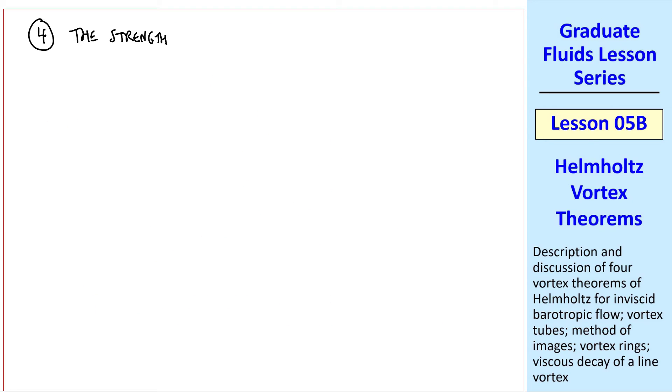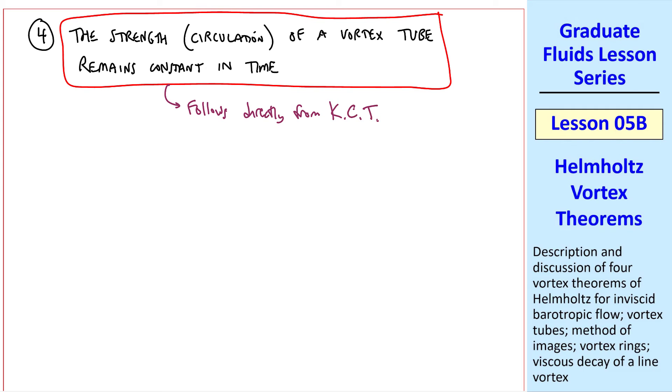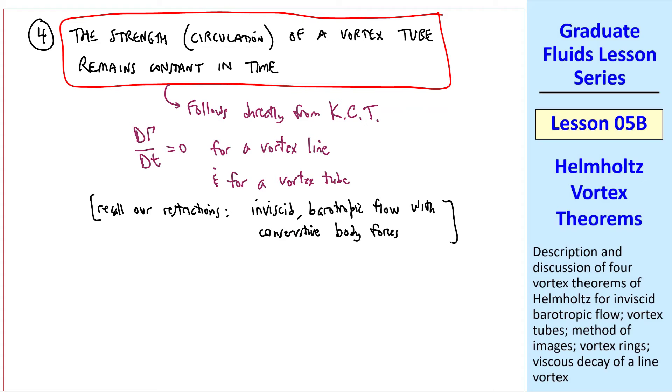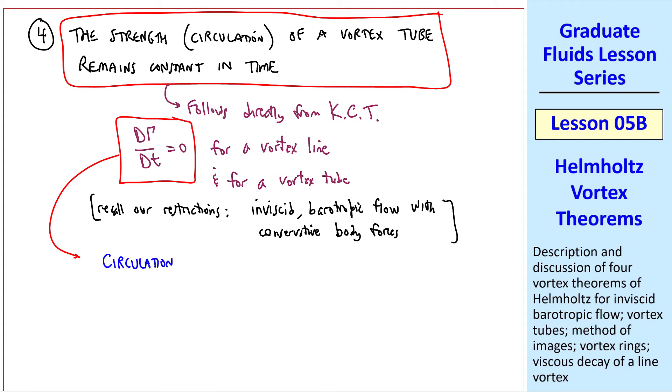Finally, Helmholtz's fourth theorem says that the strength and the circulation of a vortex tube remains constant in time. This follows directly from Kelvin's circulation theorem, namely, d gamma dt equals zero for a vortex line. And if we group a bunch of vortex lines together, it also applies for a vortex tube. I'll remind you of our restrictions: we have an inviscid barotropic flow with conservative body forces such as gravity. These restrictions apply for all of these Helmholtz theorems. If the circulation is not changing as we move along with the fluid, then it follows that circulation of a vortex tube is constant in time. This is Helmholtz's fourth theorem.